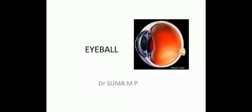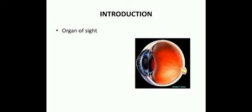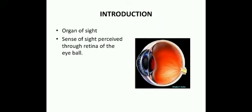The topic for today's session is the eyeball. The eye is an organ of sight, and the sense of sight is perceived through the retina of the eyeball. It is protected by the surrounding structures. The eyeball is placed in the bony orbit and surrounded by the extraocular muscles and the periorbital fat.